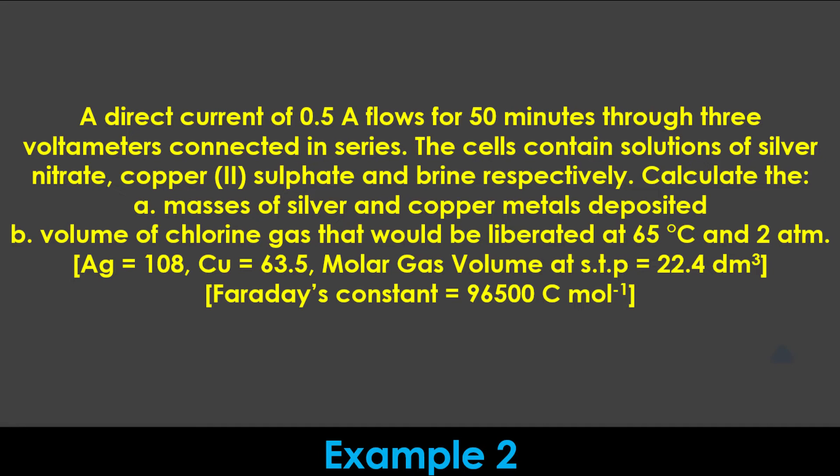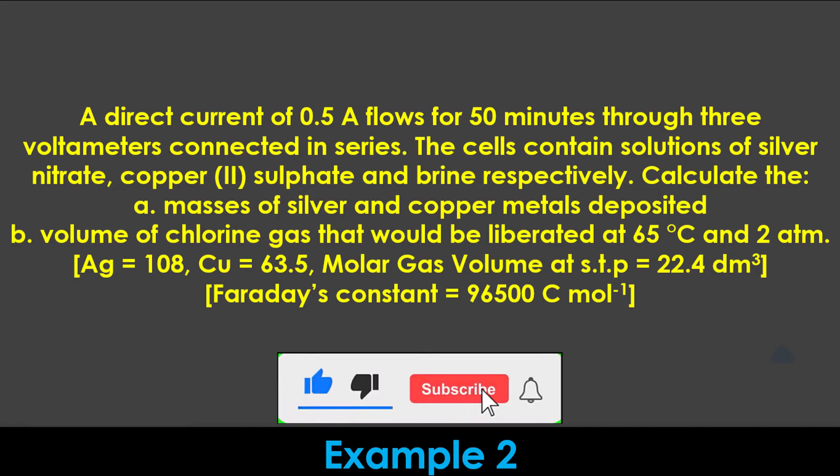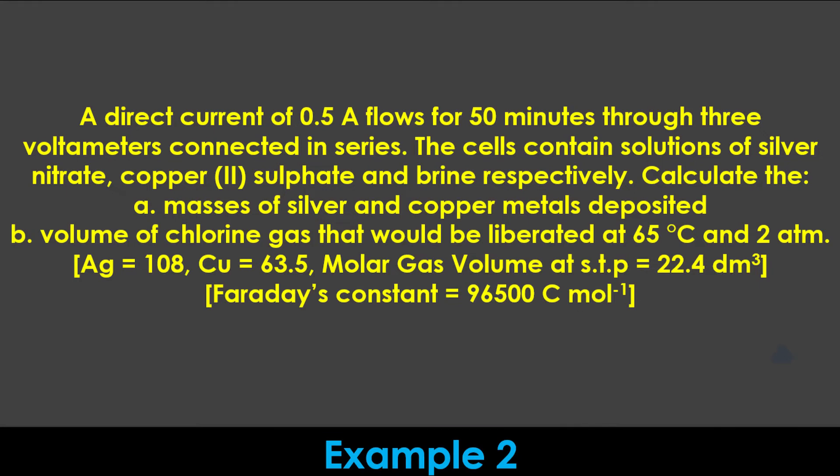In this question, we'll first calculate the quantity of electricity that was passed through the three voltameters using the parameters provided. Then use that value to determine the masses of silver and copper metals deposited through mole concepts. After that, we'll apply the same mole concept to calculate the volume of chlorine gas liberated at STP, and then use the general gas equation to determine the volume of chlorine gas that would be liberated at the given conditions.